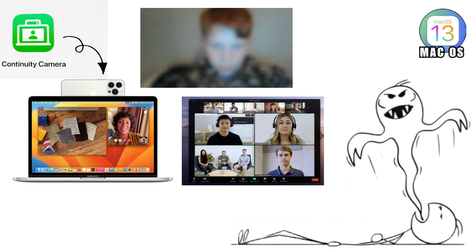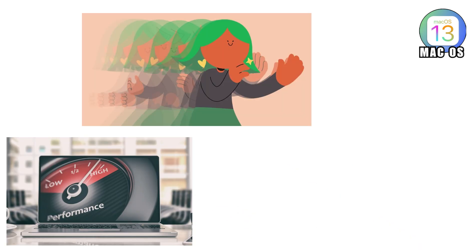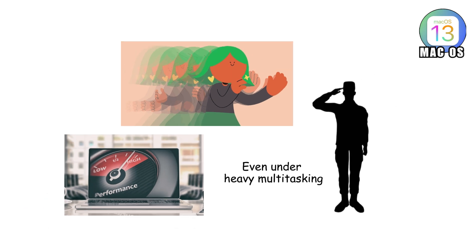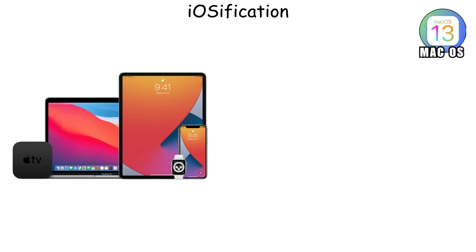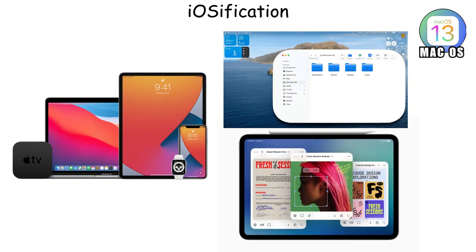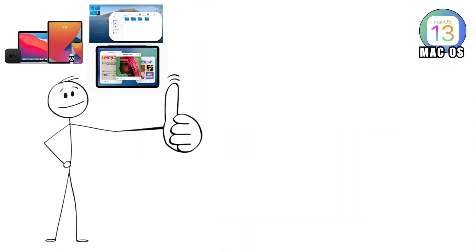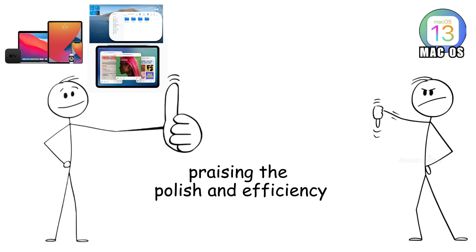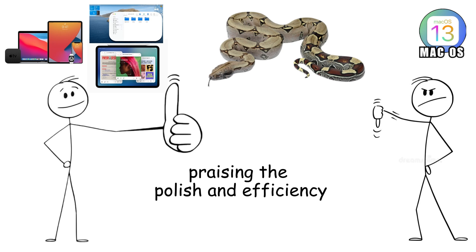Continuity Camera turned your iPhone into a webcam so good it exposed how garbage MacBook webcams have always been, making Zoom calls slightly less soul-crushing. Performance improved across the board, animations got smoother, and the system felt snappy even under heavy multitasking. But Ventura leaned hard into the iOSification of macOS — more rounded corners, more iPad-like menus, and deeper Apple Silicon optimisation. Some veterans loved it, praising the polish and efficiency, while others insisted macOS was being slowly swallowed by iOS like a boa constrictor.